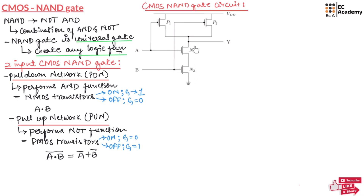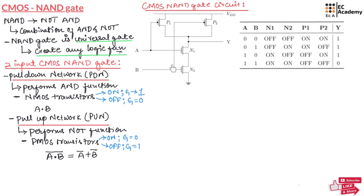Before going to the working of the circuit, remember that NMOS will be ON only when the inputs are 1, and OFF when the inputs are 0. Now let us understand the working of the NAND gate circuit. This truth table represents the operation of the circuit. We have two inputs A and B, giving four combinations: 00, 01, 10, and 11. When inputs are 00, both NMOS transistors will be OFF and both PMOS transistors will be ON, so VDD flows through the PMOS transistors to the output, giving output equal to 1.